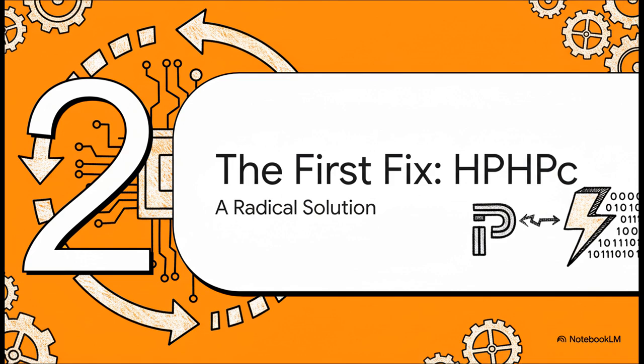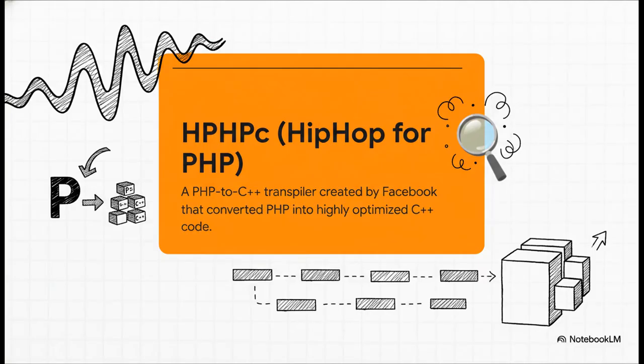So Facebook's first big swing at this problem was, well, it was pretty radical. Honestly, it was a bold move. They basically asked, what if we just stopped interpreting PHP? What if we could just change it into a completely different, way faster language? And that idea became HPHPC, or Hip Hop for PHP.